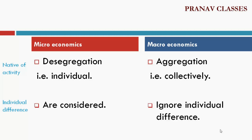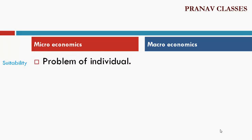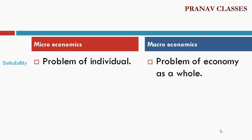On individual differences: in microeconomics, individual differences are considered. In macroeconomics, individual differences are ignored. In terms of suitability: microeconomics is suitable when there is a problem of an individual, while macroeconomics is suitable when there is a problem of the economy as a whole.